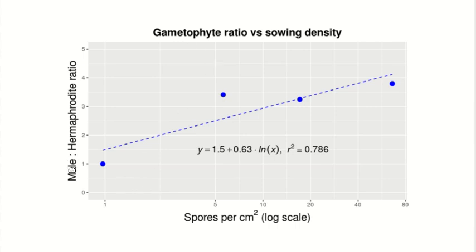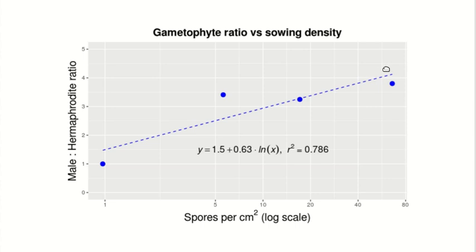Here we see the gametophyte ratio — male to hermaphrodite — as a function of the spore density. As spore density increases, the proportion of males also increases, which is what we had expected. One vulnerability when counting gametophytes is that hermaphroditic gametophytes are larger than male gametophytes. Therefore, a hermaphroditic gametophyte could be large enough to conceal underneath it one or more male gametophytes, resulting in undercounting of males. So the real count of male gametophytes might be even higher, pushing this ratio even higher than what you're seeing here.